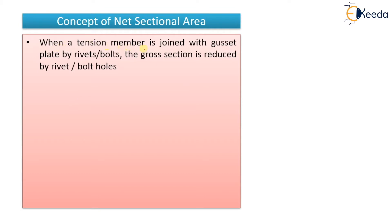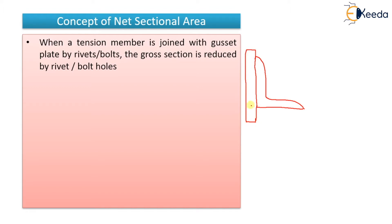When a tension member is joined with gusset plates by rivets or bolts, the gross section is reduced by the rivet or bolt holes. For example, this is your angle section, and it is connected with a gusset plate. There is a gusset plate behind it and it is connected — you can use either welding, bolting, or riveting.